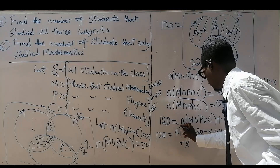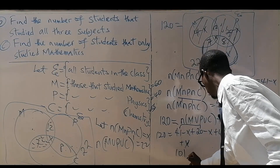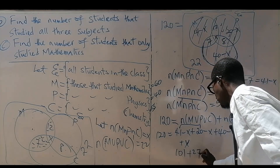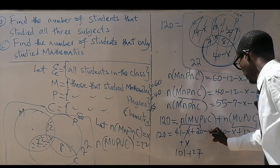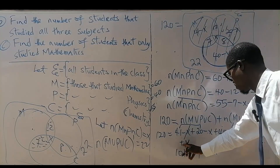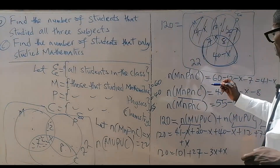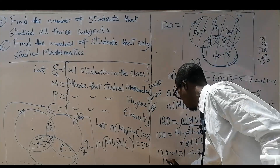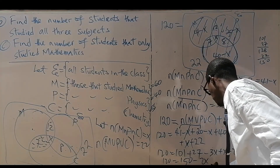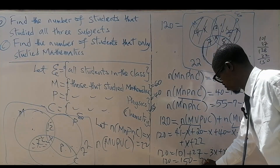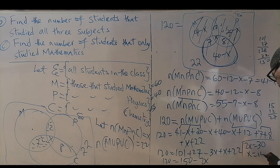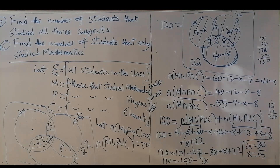Combining everything: 120 equals 150 minus 2X. Moving minus 2X to the other side: 2X equals 150 minus 120, that's 30. So X equals 15. The number of students that studied all three subjects is 15.